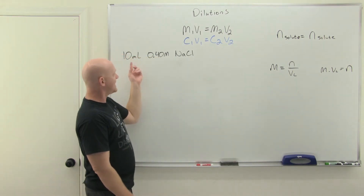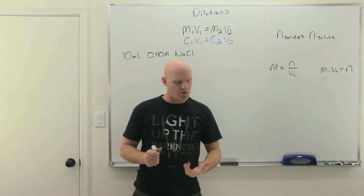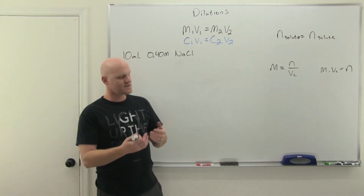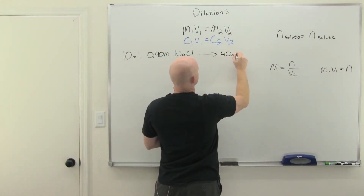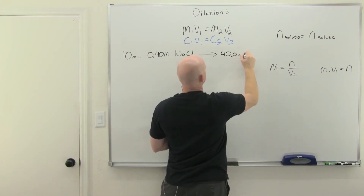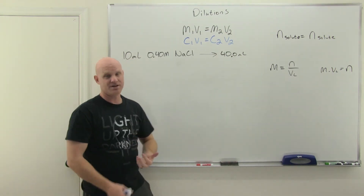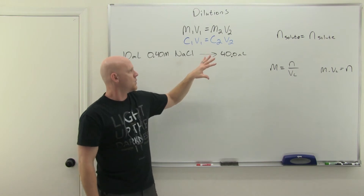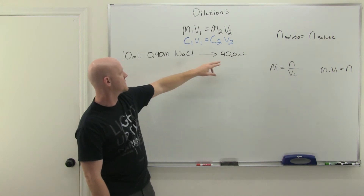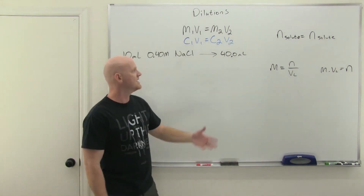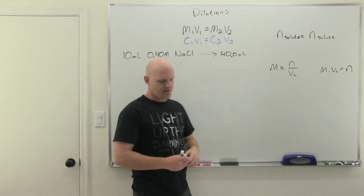Let's take a look at the problem. We've got 10 milliliters of 0.4 molar NaCl, and it's going to be diluted to a total volume of 40.0 milliliters. We often phrase it as 'diluted to a total volume,' which makes it clear we're being given V2.